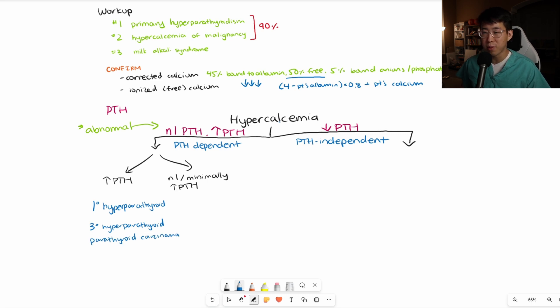On this side, with the normal and minimally elevated PTH, it could still be primary hyperparathyroidism, but it could also be familial hypocalciuric hypercalcemia, or FHH. If you have this situation, what you're going to want to check next is a 24-hour urine calcium. If that is greater than 250, that is suggestive of primary hyperparathyroidism. If it's less than 250, then that is suggestive of familial hypocalciuric hypercalcemia.